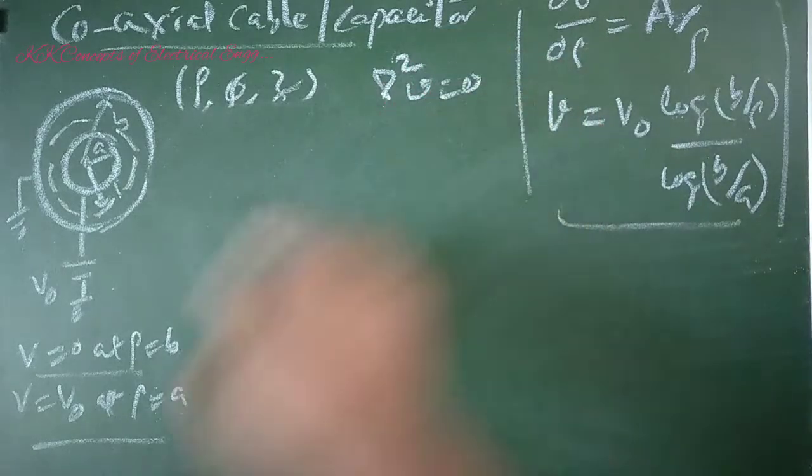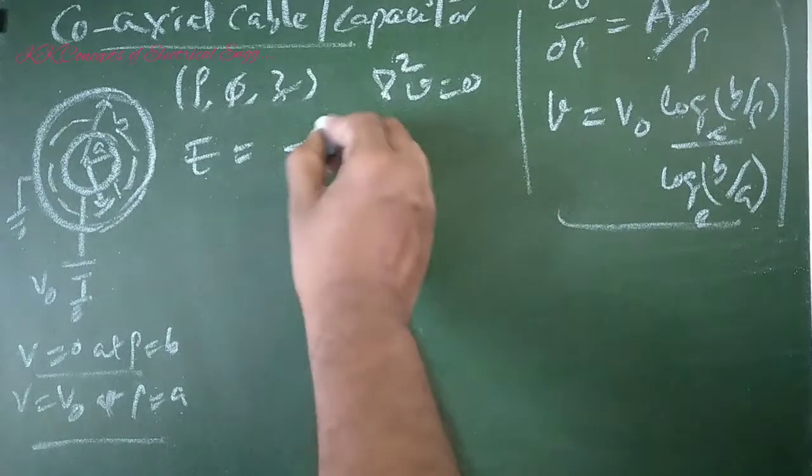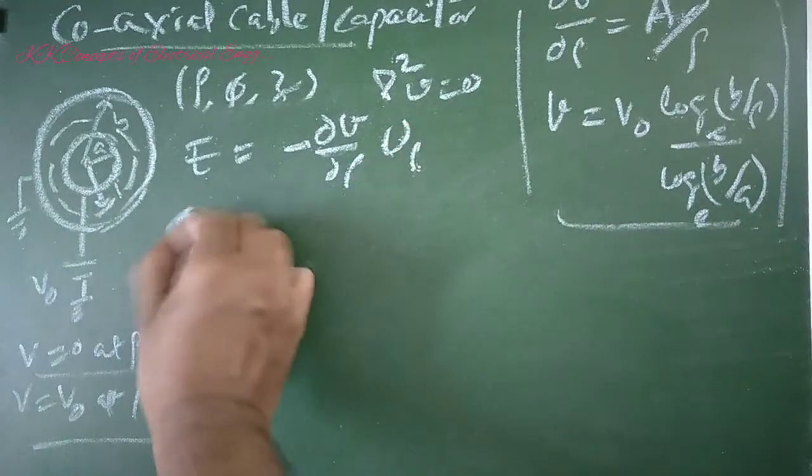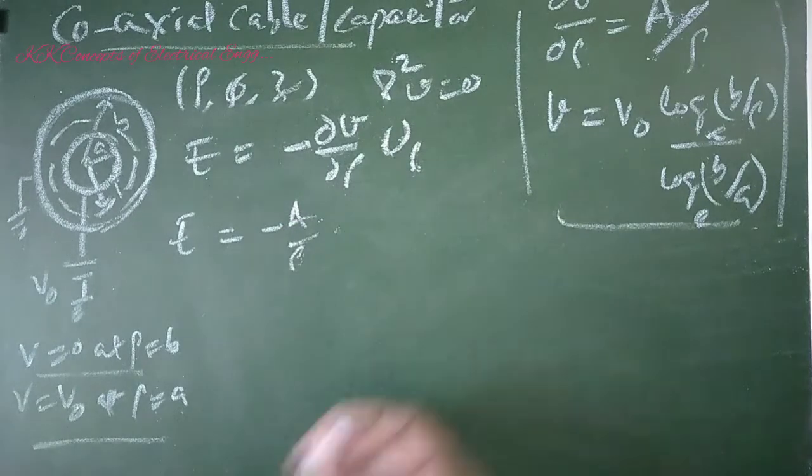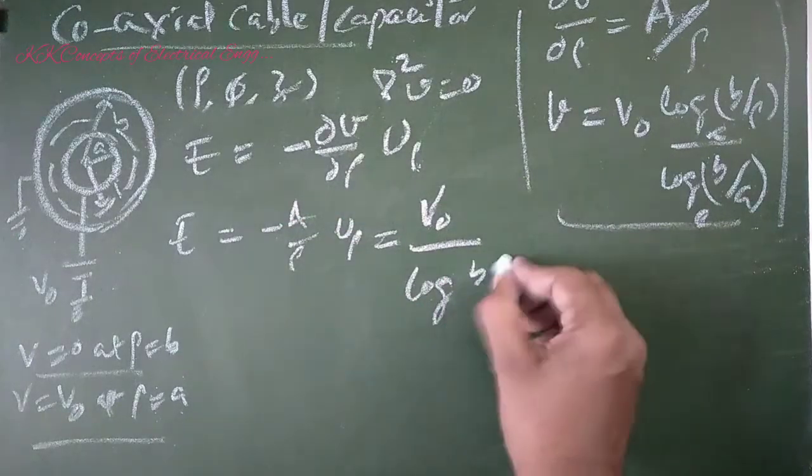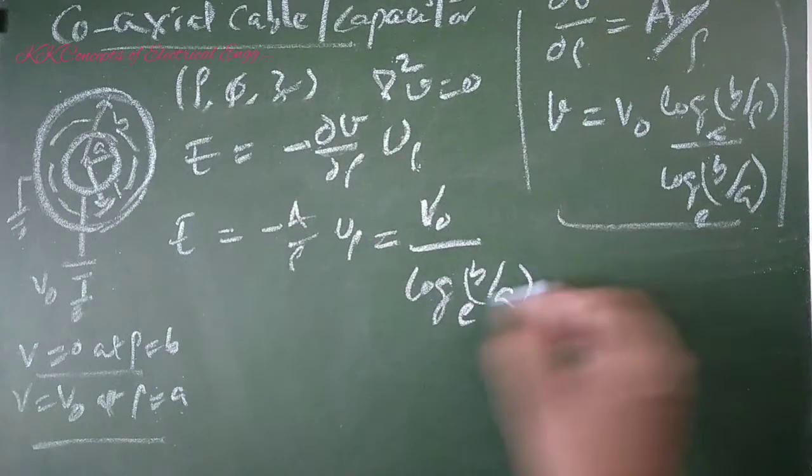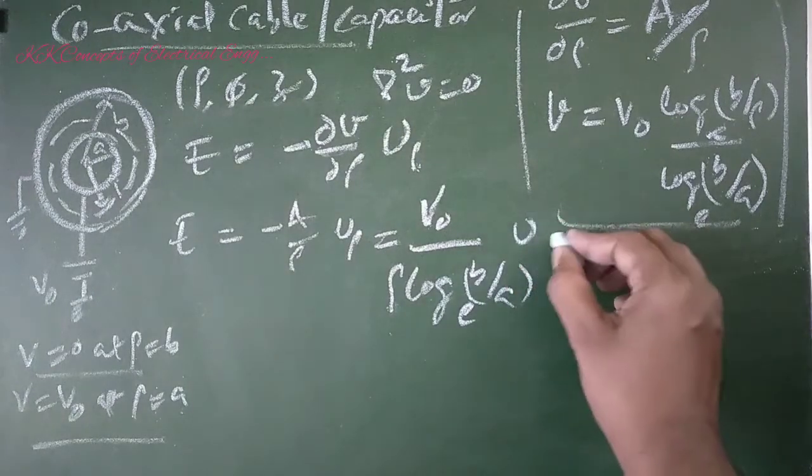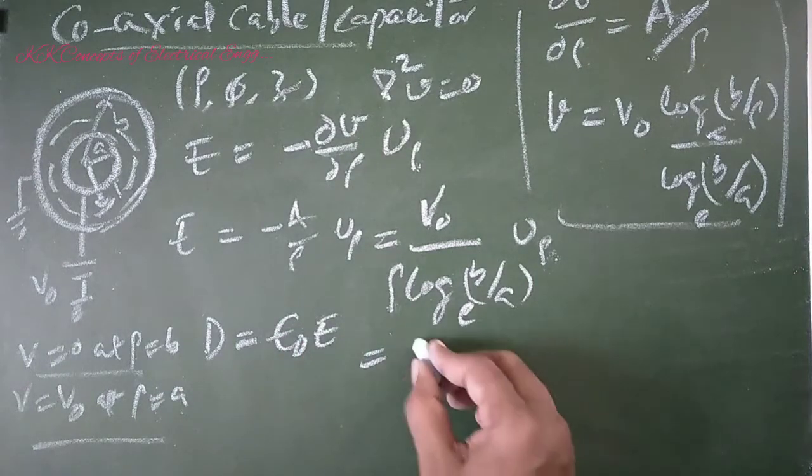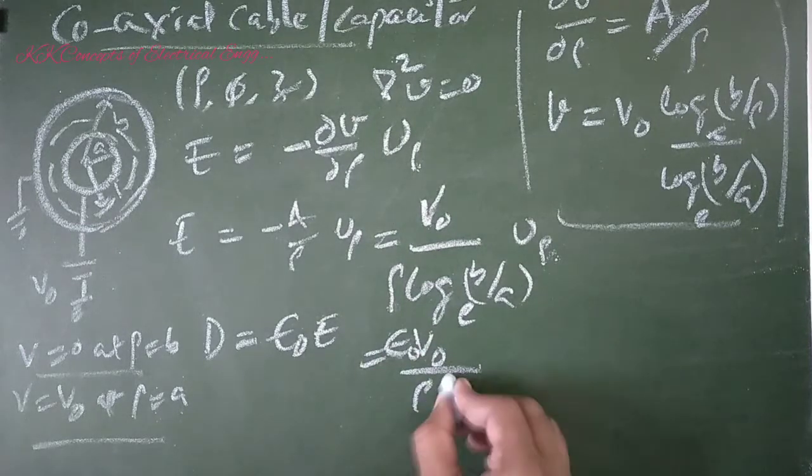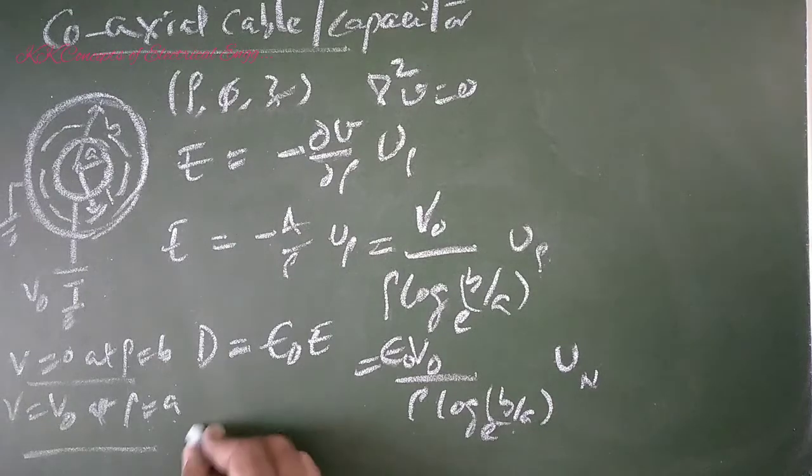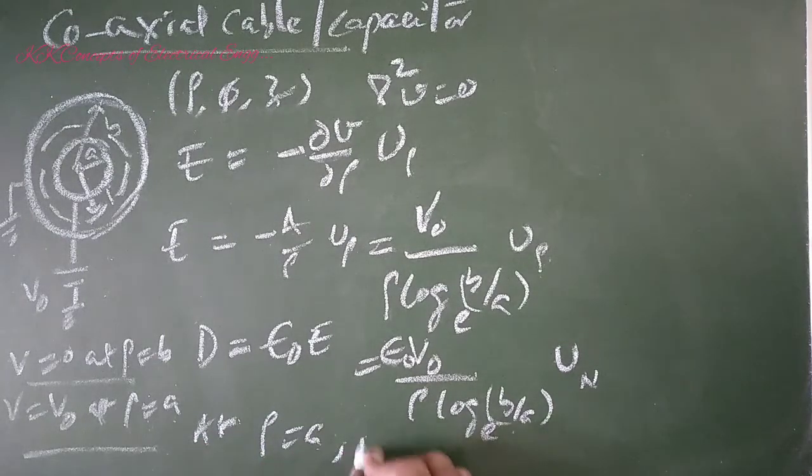∇²V equals 0 and applying boundary conditions, we know E equals -∂V/∂ρ in the unit direction along ρ. E equals V₀/(ρ log(B/A)) u_ρ. D equals ε₀V₀/(ρ log(B/A)) u_ρ. At ρ equals A, D_n equals ρ_s.